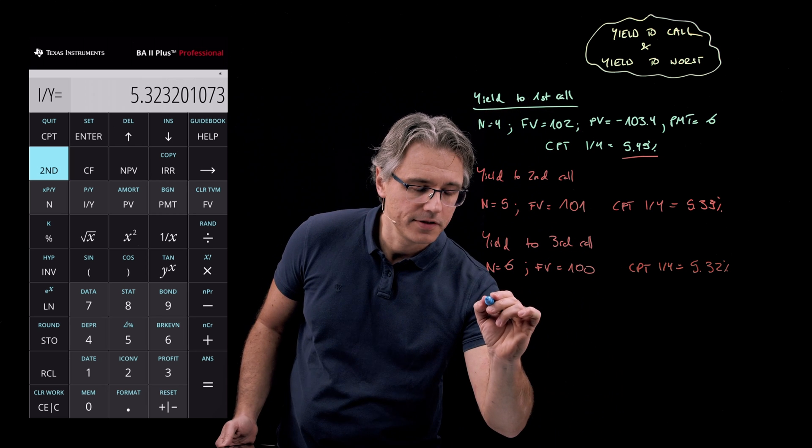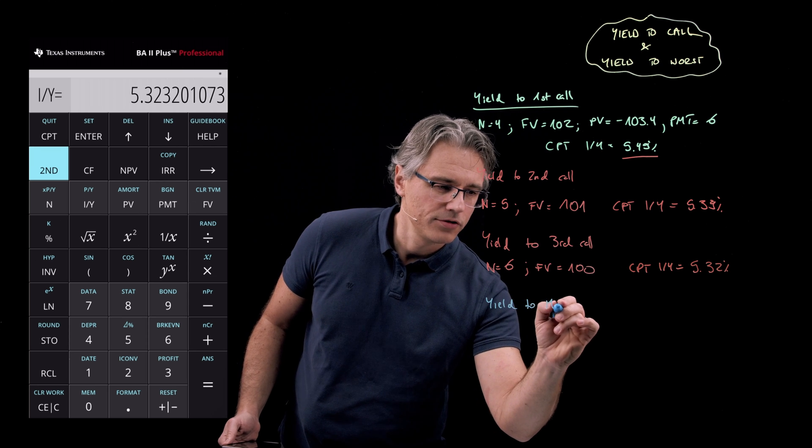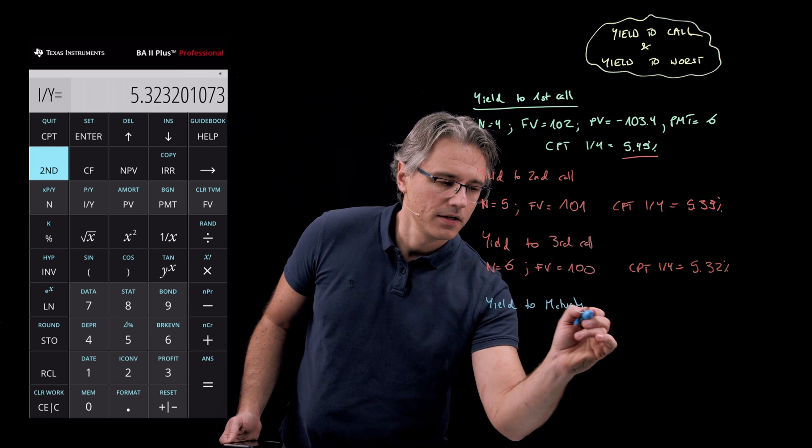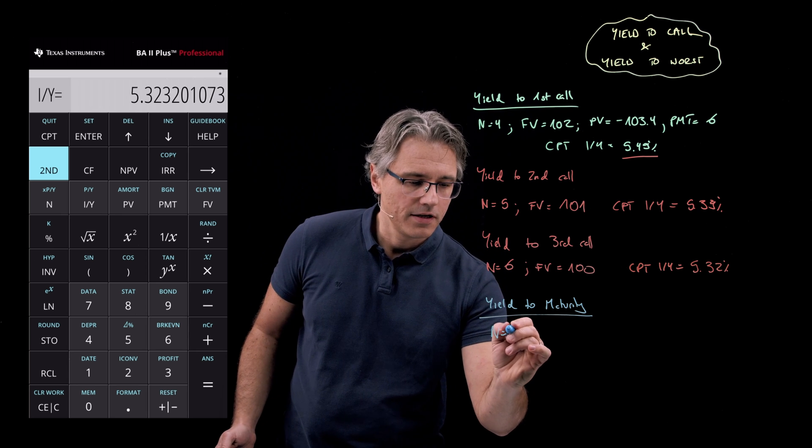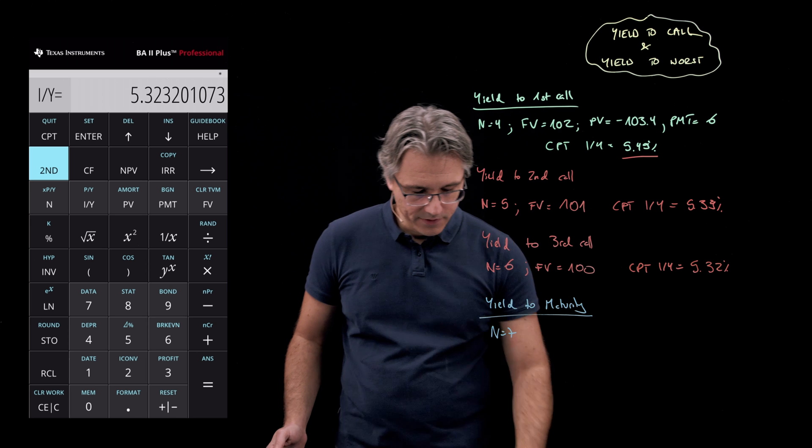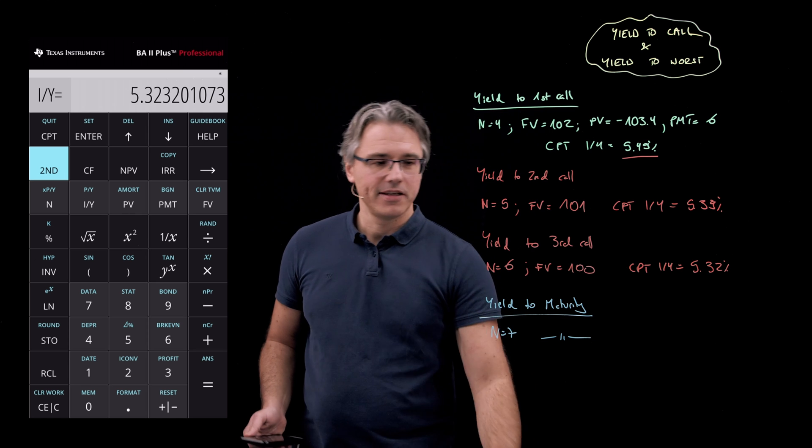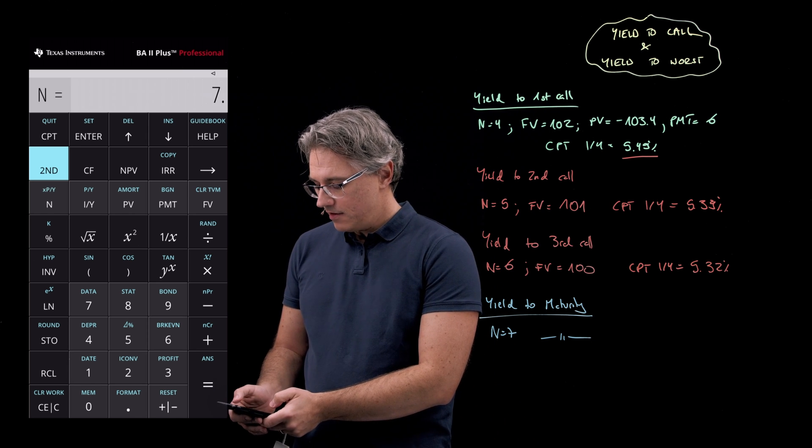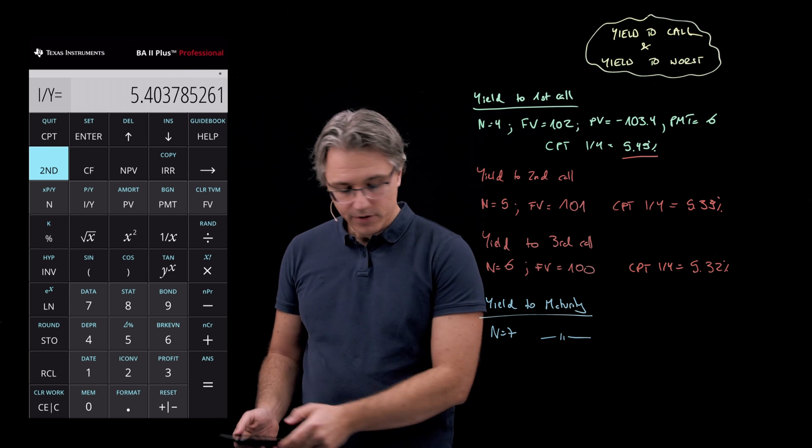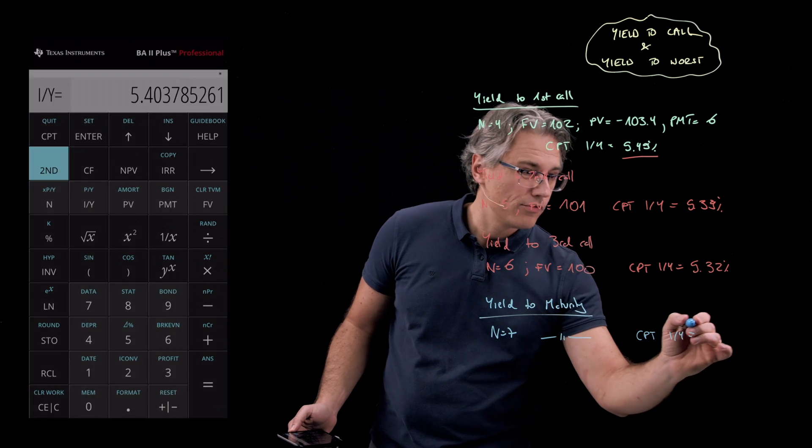And now I'm going to use a different color because it's simply the yield to maturity, isn't it? The yield to maturity assuming the bond is not called early. So we're going to have an N equal to 7. The other parameters including FV, they remain the same. So just have 7, press N, recompute I over Y, and I see that this becomes 5.4 roughly.